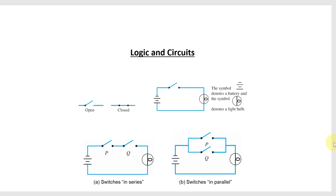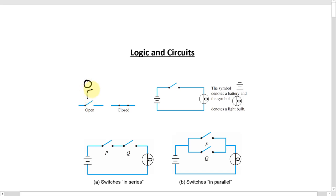This is a video on the topic of logic and circuits. In a circuit, we can talk about switches. The switches can be in an open position or a closed position. When it's in an open position, you could call that a zero, and you can make the connection to logic by calling that false. In the closed position, we can call that one, and we can call that true in logic. So we have this binary zero and one, true and false choice for switches in a logic circuit.